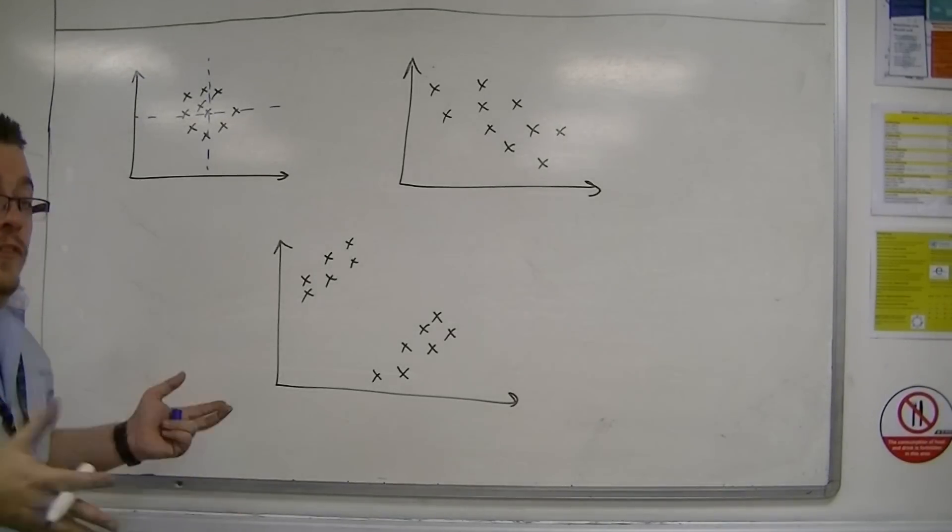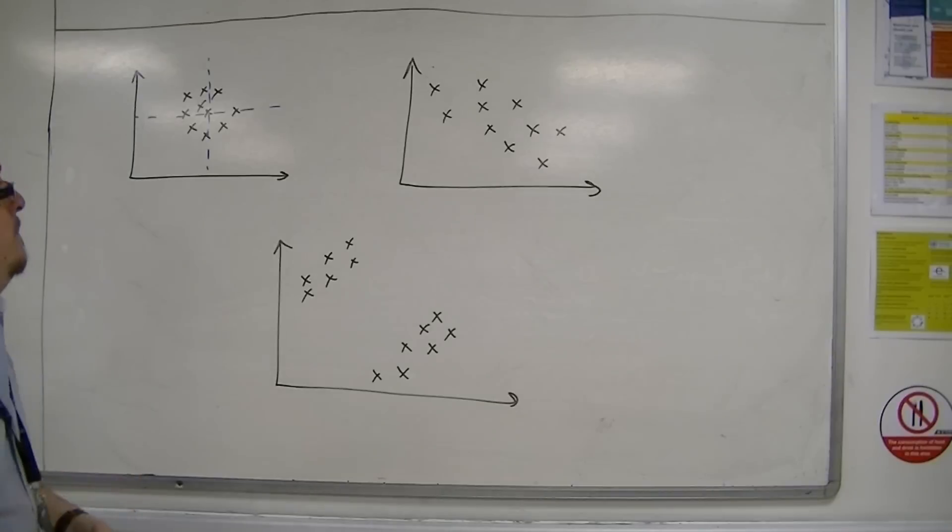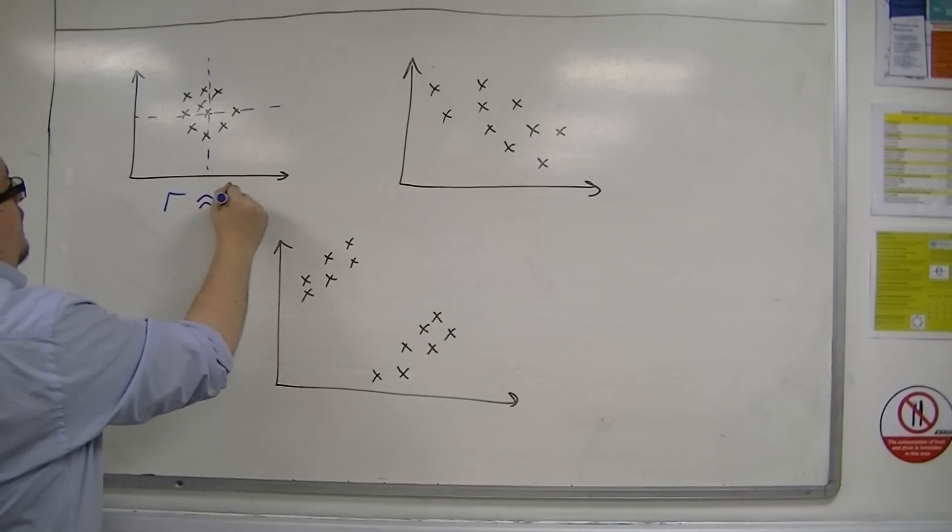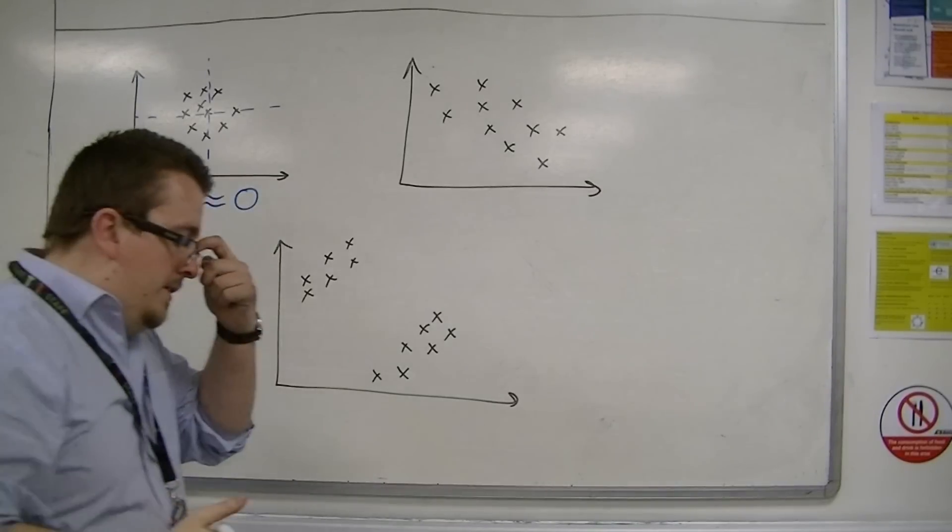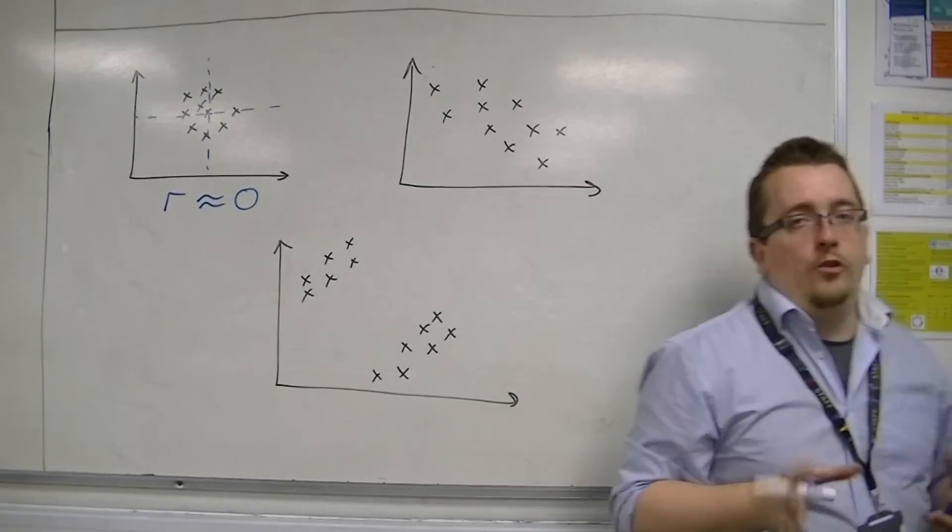And then you can kind of easily see that the data is spread over the four quadrants fairly evenly. And so, because of that, you'd be thinking that would mean that I would be expecting a value of R that is roughly zero. So practically no correlation whatsoever.